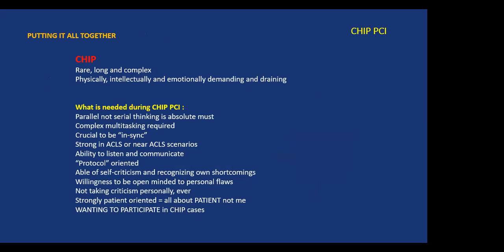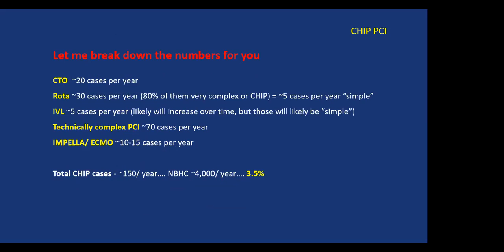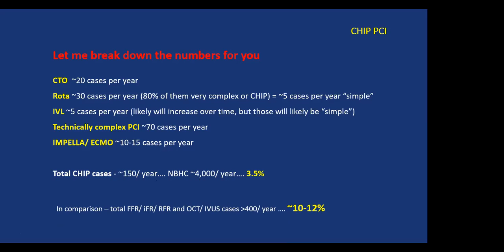The cath lab directly has its own challenges in dealing with the CHIP team. In terms of volume, the total number of CHIP cases currently is about 150 per year, representing about 3.5% of all cases. CTO we're doing about 20, rota about 30, IVL about 5 — including only high-risk patients. Technically complex PCI with involvement of Impella and ECMO totals those 150. For comparison, hemodynamics and intravascular imaging is used in 10-12% of cases, which is considered low frequency.